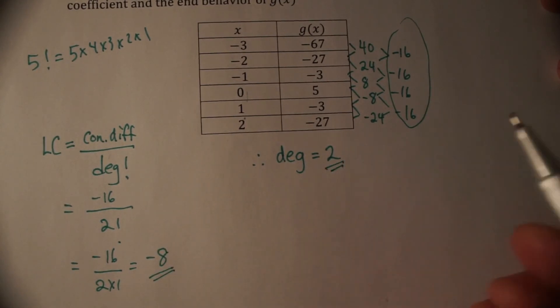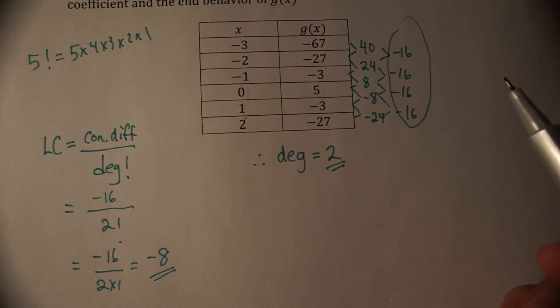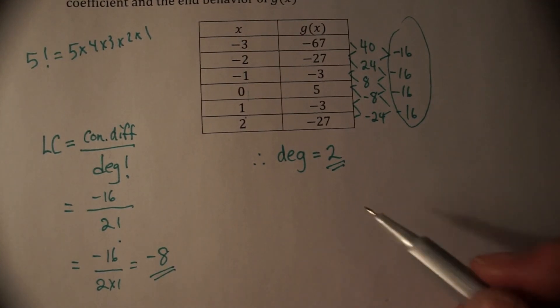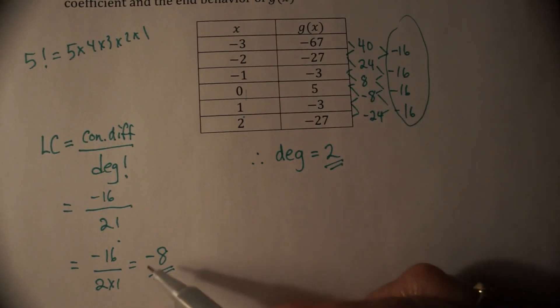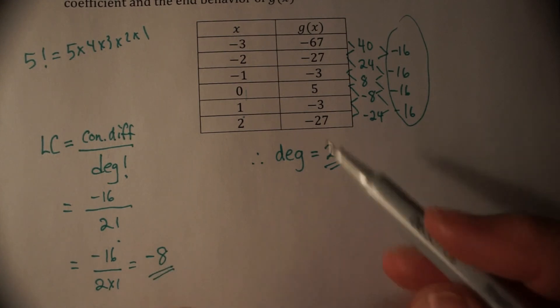And our degree is positive 2. It says give the end behavior. Well, the end behavior will depend on the degree, which is even, meaning it's both up or both down. And negative, so it has a negative leading coefficient. So that means they're both going to be going down.